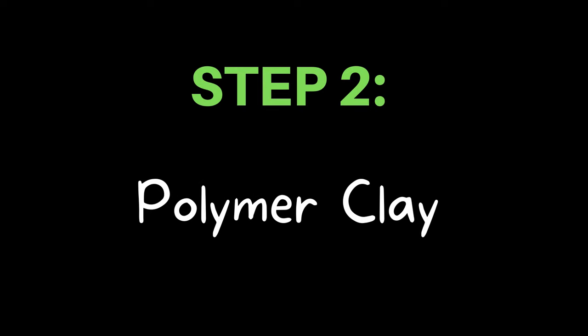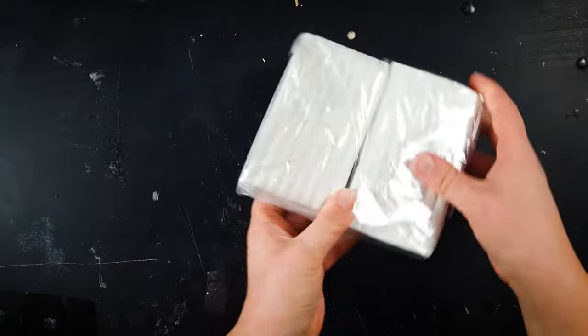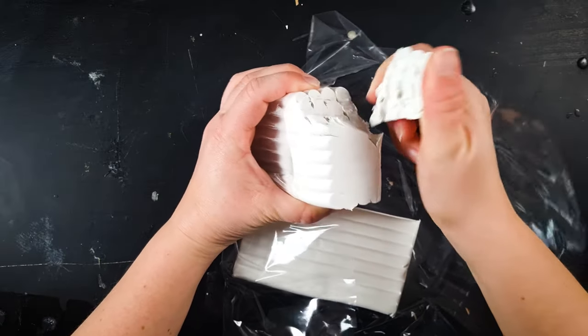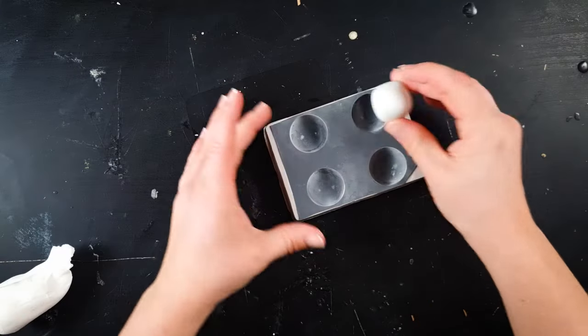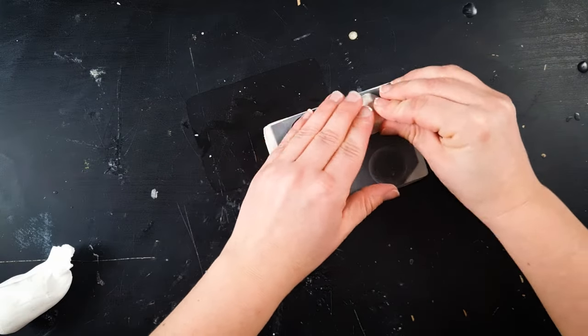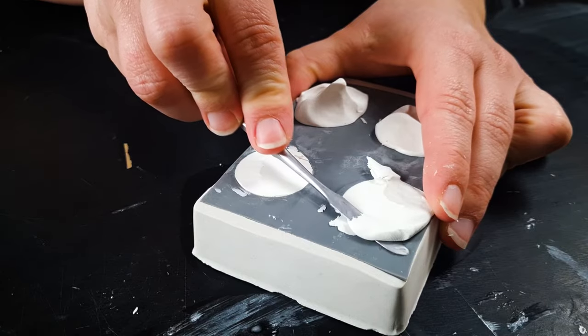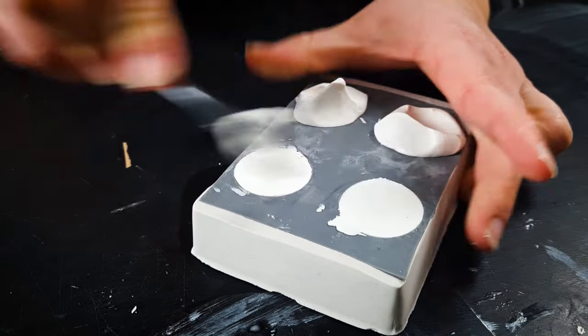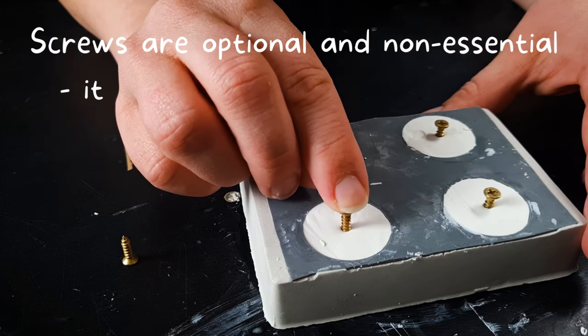Step two, it's time to cast the eyes in polymer clay and for this I'm using Sculpey original which is conveniently white for the white of the eyes. After kneading it for a minute I simply press it into my half sphere molds and then flatten the top with a spatula. Then I insert a little screw into the back which will act as a convenient little handle.